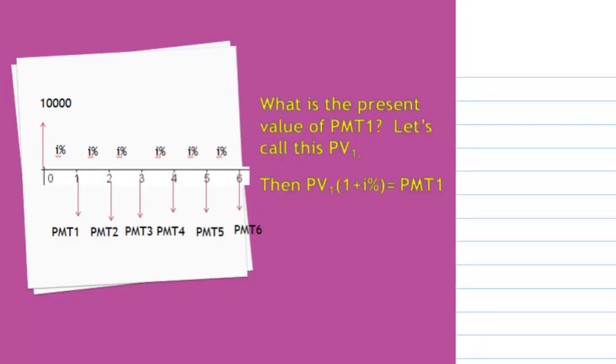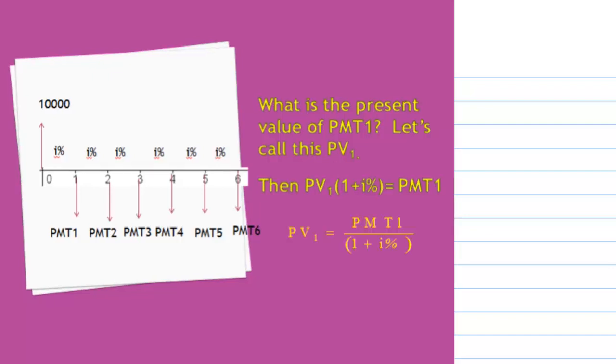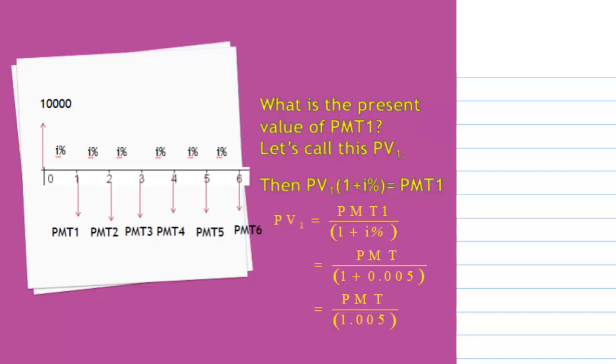What is the present value of PMT1? Let's call this PV₁. Because the interest is compounded over one period, PV₁ times (1+I%) must equal PMT1. That means PV₁ equals PMT1 over (1+I%), which equals PMT over 1.005.